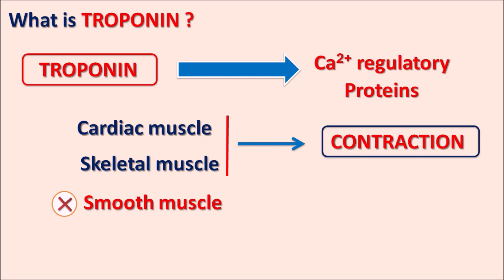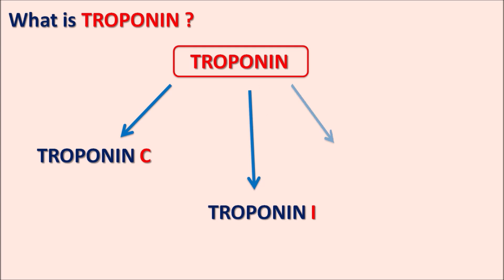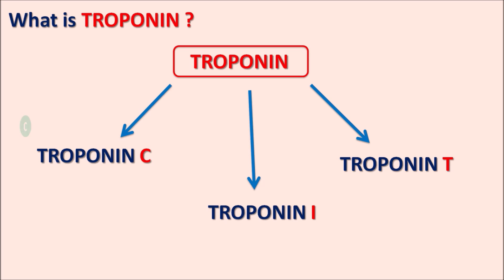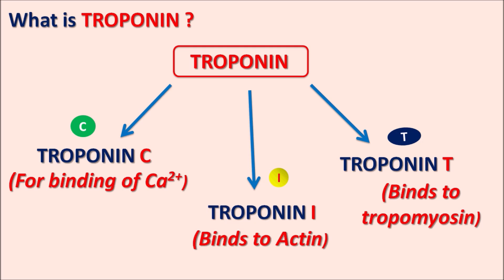Troponin is available in three forms. One form is responsible for binding with calcium, while the other two forms are responsible for binding to actin as well as tropomyosin. The three forms are troponin C, troponin I, and troponin T. Troponin C is mainly responsible for binding of calcium, which initiates contraction in the cardiac as well as skeletal muscle. Troponin I binds to actin, and troponin T binds to tropomyosin. Together, these three forms make up the troponin complex.